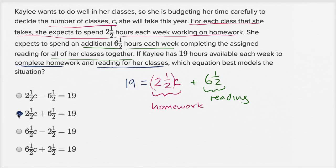Yep, that's this choice. The only difference between this and what I wrote is they just swapped the two sides of the equality, which you can always do. These other choices, let's see, 6½ times C—well, this would imply that you're spending 6½ hours per class, so that's not right. And then this is also 6½ times C, so that's not going to work out either.